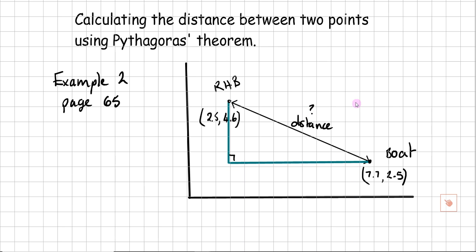I want to know this distance, so I need to know the other two sides, because Pythagoras's theorem only works if I know two sides. We need to know this distance and this distance. We know the coordinates of both points. The Y coordinate of Robin Hood's Bay is 4.6. The Y coordinate of this lower point is 2.5.